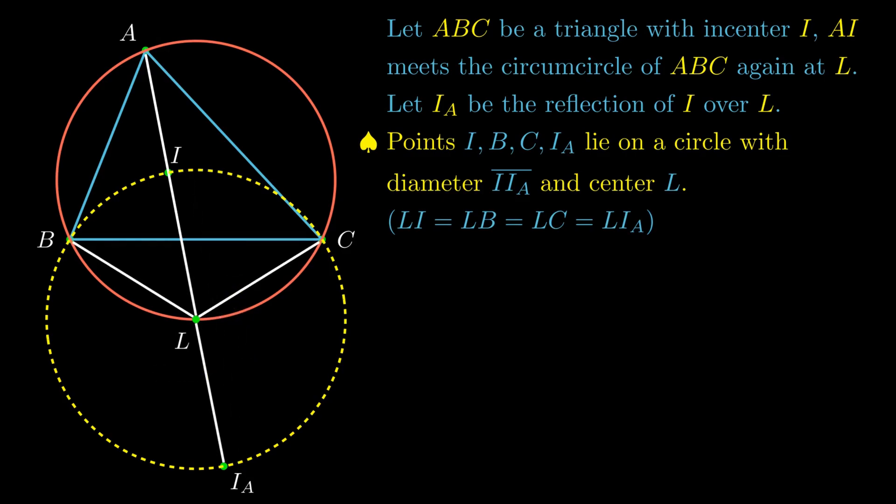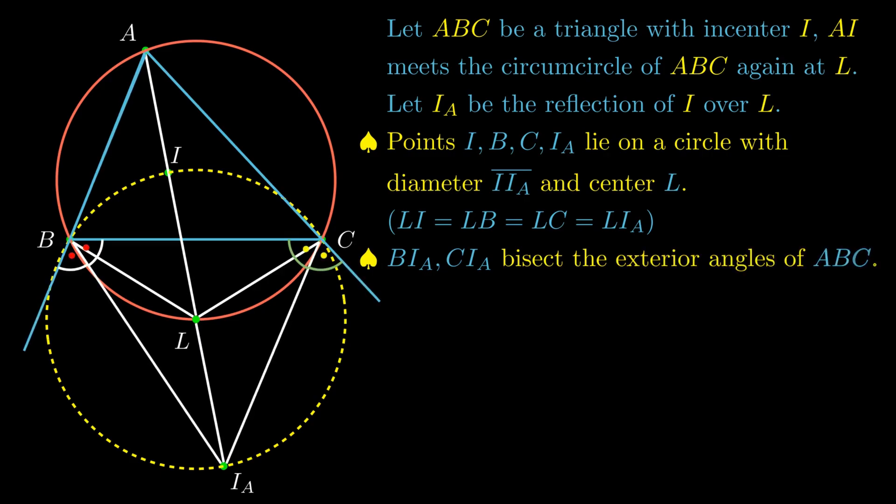The second fact is lines BI sub A and CI sub A bisect the exterior angles of the triangle ABC. In other words, they are the exterior angle bisectors of angle B and angle C.